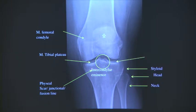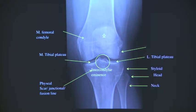So there is a normal concavity there. Don't call it erosion. Don't call it erosion. But be careful because this is one of the most common areas for gout, and you will find erosion there. But this concavity is normal.